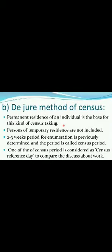De jure method: The permanent residence of an individual is the base for this kind of census taking. Persons of temporary residence are not included. A two to three week period for enumeration is previously determined, and this period is called the census period. One day of the census period is considered as the census reference day.